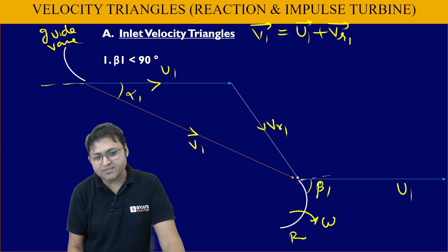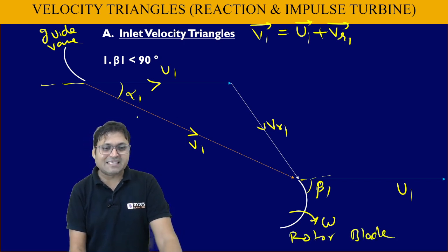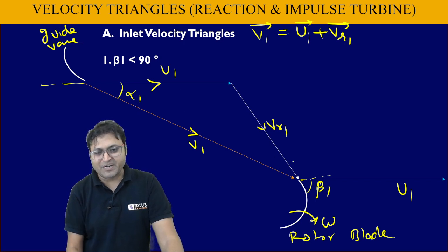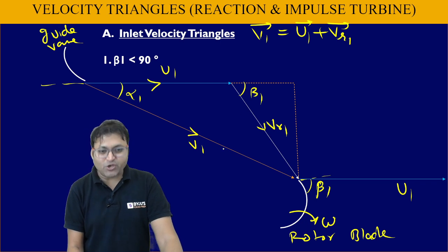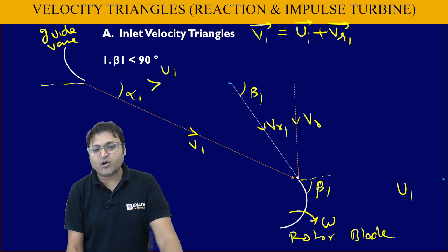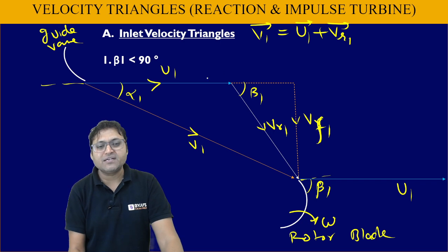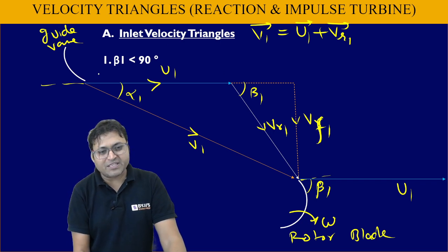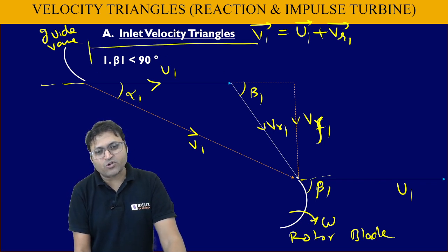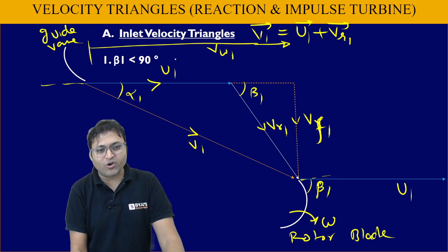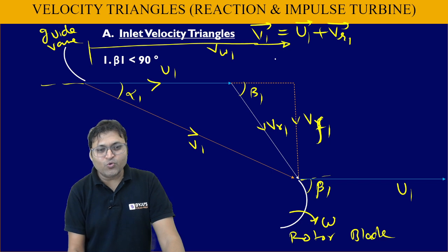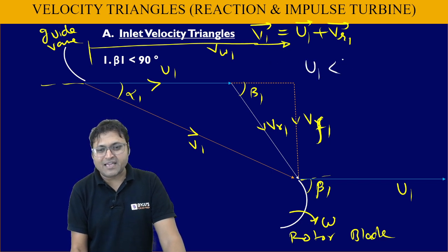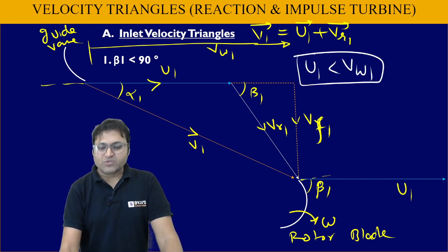This is the guide vane and this is the rotor blade. When β1 is less than 90 degrees, this is how the triangle will be drawn. If we resolve V1 into two components, the vertical component is Vf1 (flow component) and the horizontal component is Vw1. When β1 is less than 90 degrees, U1 will be less than Vw1.